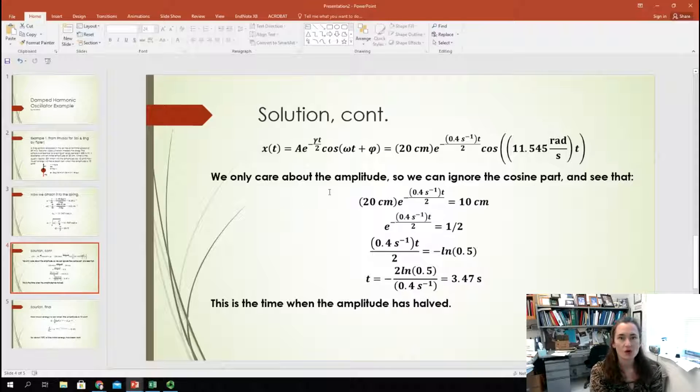Okay? Now, it's only asking me about what time it is when the amplitude is 10 centimeters. So, that means I'm not really caring so much about the exact position of my mass, right? I just want to know when its amplitude is 10 centimeters. So, that means that I can take the stuff that multiplies the cosine, which is this 20 centimeters times e^(-0.4*t/2) part. I can take that and set that equal to 10 centimeters.